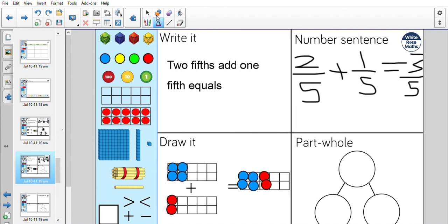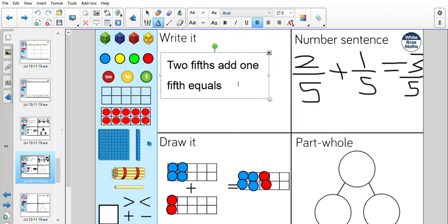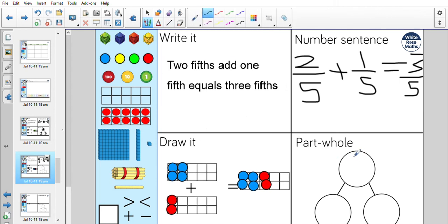So now we've found out the answer. I can finish off my writing: two fifths add one fifth equals three fifths. And the final thing to do is to fill in my part-part-whole. So the answer is three fifths. And that's made up of two fifths and a one fifth.